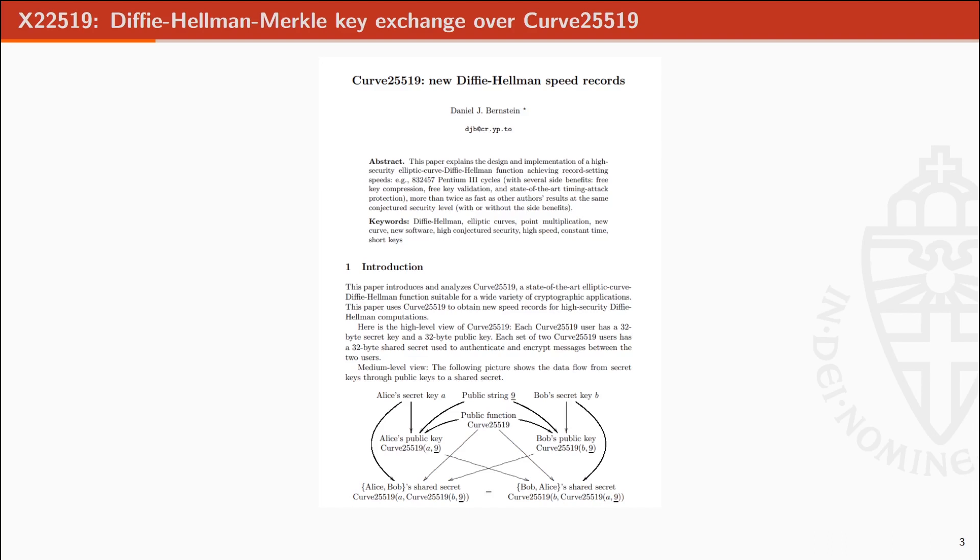X25519 is a Diffie-Hellman-Merkle key exchange introduced by Bernstein in 2006. It makes use of a Montgomery elliptic curve over a field Fp, with p the prime number 2 to the power 255 minus 19.